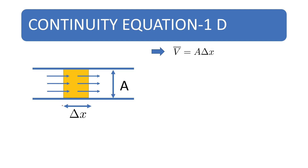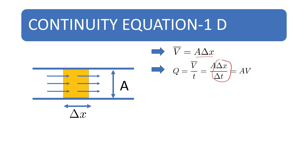The volume of this fluid element can be written as capital A into delta x, where A is the cross-sectional area. The volume of fluid flowing per second is V by T, which equals A into delta x by delta t. Since delta x by delta t can be written as velocity,